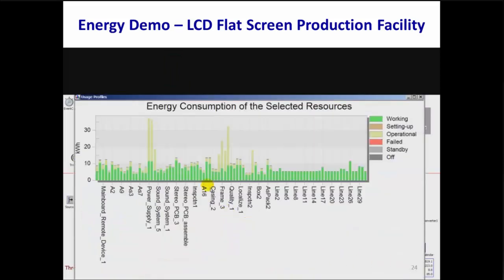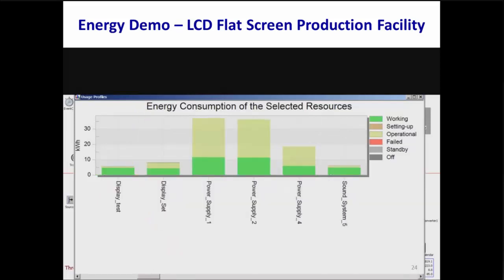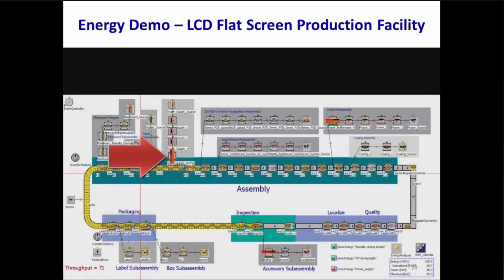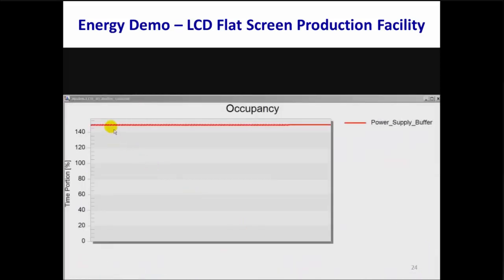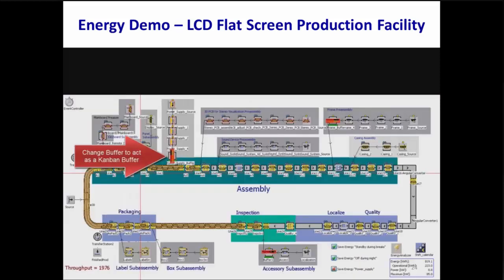If we look at the Energy Analyzer Show Chart option, we can see that the power supply area consumes a lot of energy while in the operational state. The light green areas for power supply stations 1 and 2 show they consume a lot more energy in the operation or wait state than other stations. While running the simulation, it appears the power supply buffer is almost always full with 150 power supplies. One potential energy optimization opportunity would be to treat this as a Kanban buffer where the power supply line feeds the buffer only after it reaches a lower level. In our model, the Save Energy Power Supply checkbox sets up the power supply line so the buffer is filled at start of simulation, then fed only after 50 units are left.